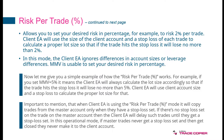Let me give you a simple example of how risk per trade in percentage works. If we set the MMV to 5%, Client TA will always calculate the lot size accordingly so that if the trade hits the stop loss, it will lose no more than roughly 5% — because there might be slippages and such.